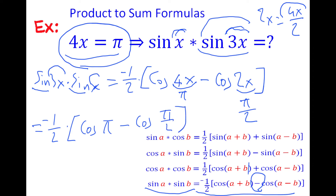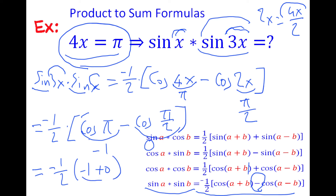Substituting in, we get −1/2 times (−1 − 0) = −1/2 times (−1) = 1/2, which is the final answer. As I said at the beginning, the formulas might look complicated, but with more practice it becomes much easier to memorize and apply them. If you have any questions, put them in the comment section below. Thank you for watching, and hopefully see you in the next video.